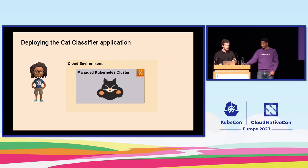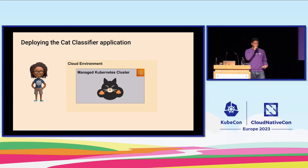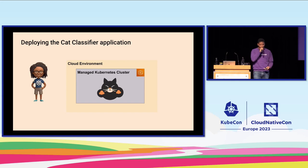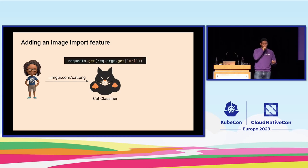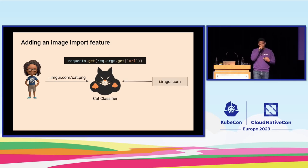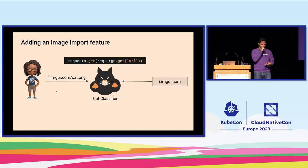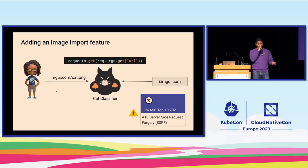Now she has an application running in EKS. Now that Kate is able to interact with the cluster, she wants to deploy the cat classifier application, which receives a cat image from the user and fetches more information externally to validate the type of cat. But sometimes a malicious attacker can try to trick the application to access resources it shouldn't — that's server-side request forgery, SSRF, one of the elements in the latest version of the OWASP Top 10.